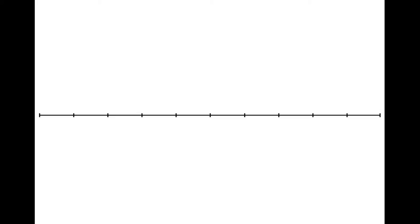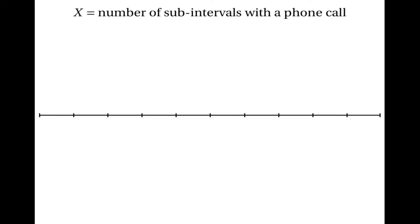Imagine that this line represents an interval of time broken down into ten sub-intervals. I'm interested in the probability of me receiving different numbers of phone calls. Let's say that x is the number of sub-intervals in which I receive a phone call, and y is the total number of phone calls I receive in the interval. Now x will have the binomial distribution because it's the number of successes in a sequence of trials — the trials being the sub-intervals and success being that I get a phone call. y on the other hand will have a Poisson distribution because it's the number of events in a continuous interval of time. So x has the binomial distribution and y has the Poisson distribution.